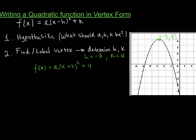Here's what to consider: do you know any other points that are on this graph for sure? If you look at it, there are some pretty clear ones — points with easy-to-determine integer values. For example, negative 2 comma 3, negative 5 comma 0, and negative 1 comma 0 are all clearly on the graph. These are X and Y values you know work for your function. So if you plug in an X and a Y value that you know are on the graph, the only unknown left in the equation would be A, and you could solve for it.